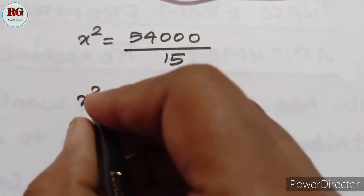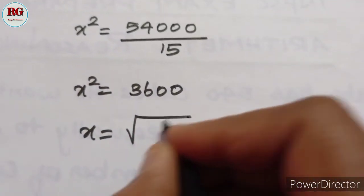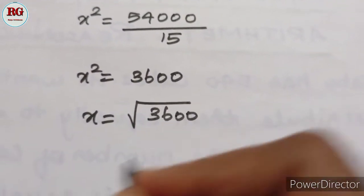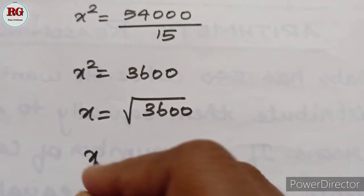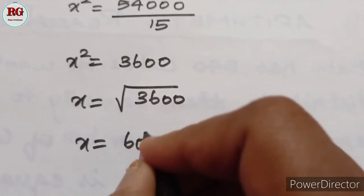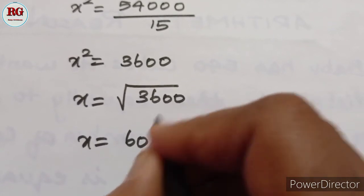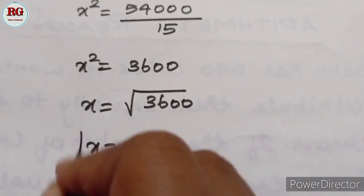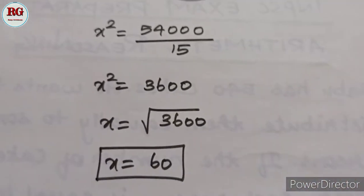Now X equals the square root of 3600. We can do the square root. That gives us X equals 60.